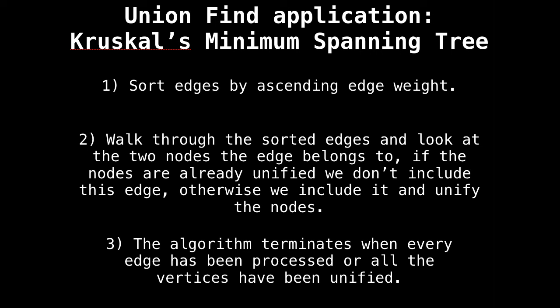Next, we want to walk through the sorted edges and compare the two nodes that the edge belongs to. If the nodes already belong to the same group, then we want to ignore it because it will create a cycle in our minimum spanning tree, which we don't want.